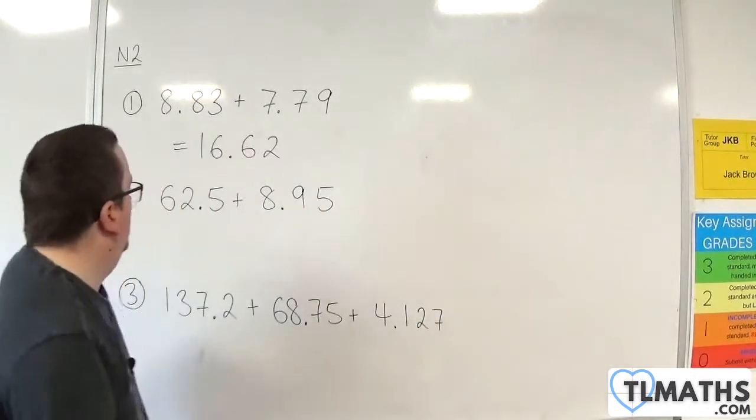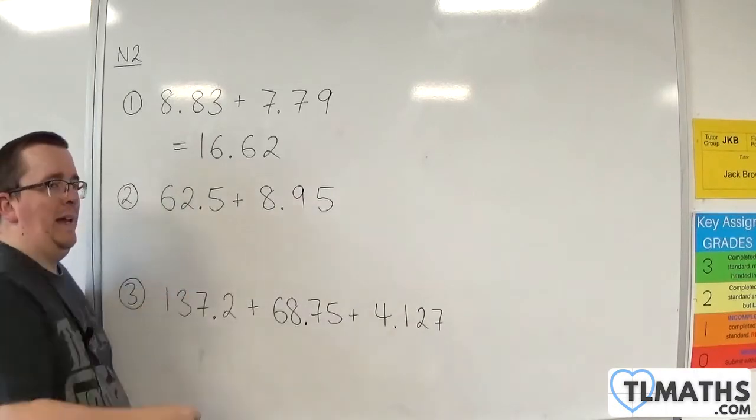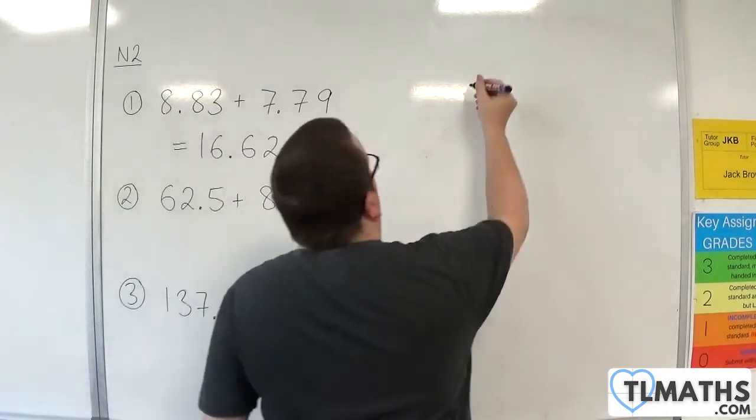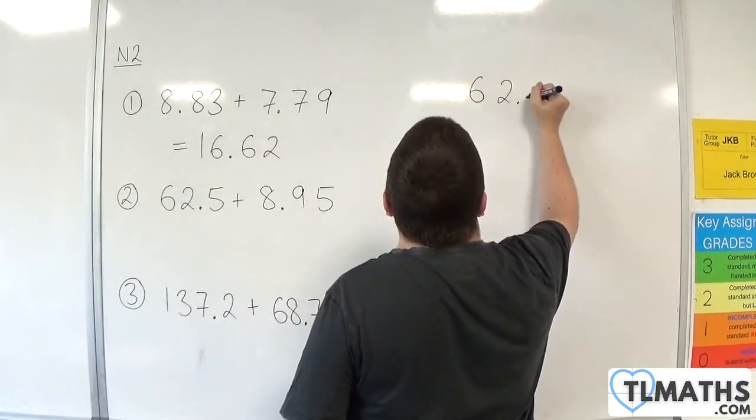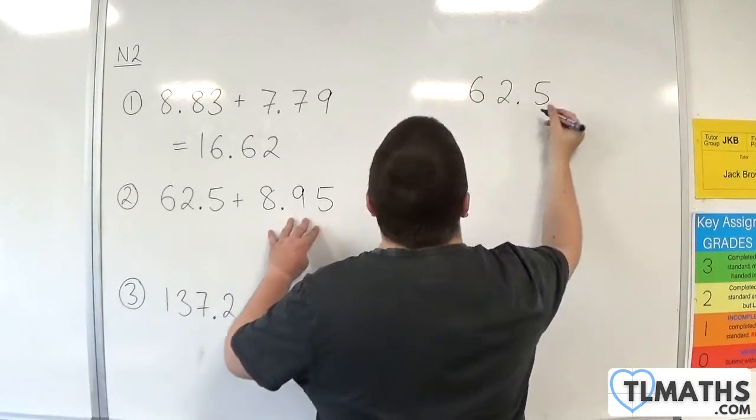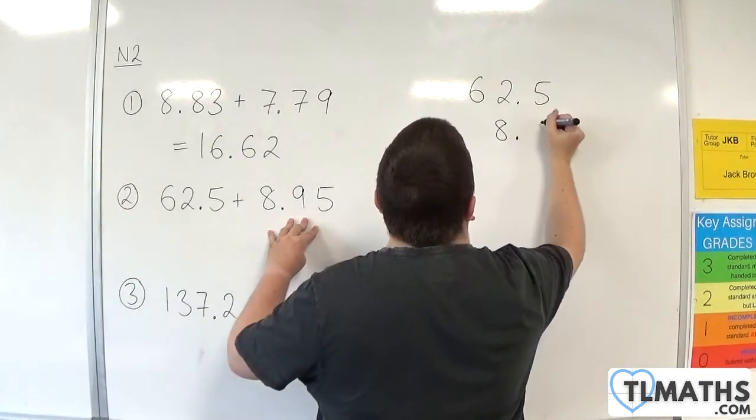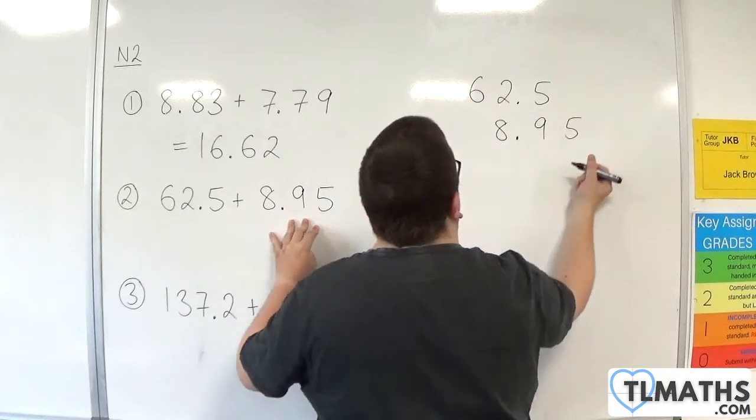Okay, number 2. We've got 62.5 plus 8.95. So, 62.5, and then 8.95. Make sure your decimal points line up, like so.